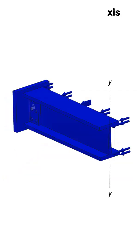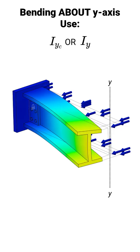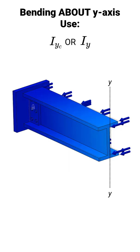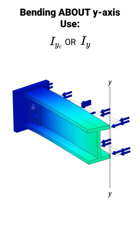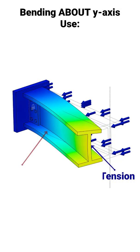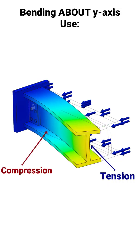How about bending about the y-axis? In this case, we have bending about the y-axis, and we know that we have tension on the right side of the beam and compression acting on the left side of the beam.